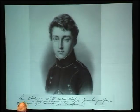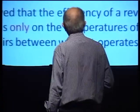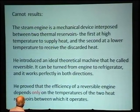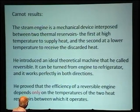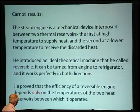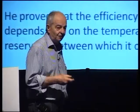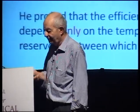This is Carnot's handwriting. He writes here that heat is nothing else but motion in a changed form — to say something like that at that time was revolutionary. The steam engine is a mechanical device interposed between two thermal reservoirs. You need two reservoirs: one at high temperature to supply heat, the second at low temperature to receive the discarded heat. He introduced the ideal theoretical machine, the reversible machine, which can be turned from engine to refrigerator. And he proves that the efficiency depends only on the temperature of the two heat reservoirs.